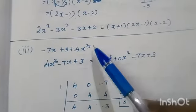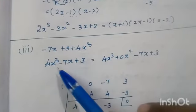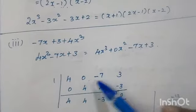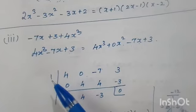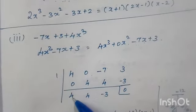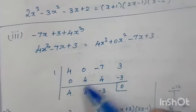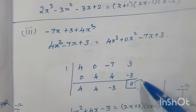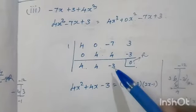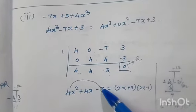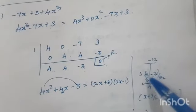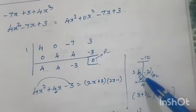Third problem: minus 7x plus 3 plus 4x³. Rewrite in standard form as 4x³ minus 7x plus 3. One term is missing, so write as 4x³ plus 0x² minus 7x plus 3. Take coefficients: 4, 0, minus 7, 3. Try 1: bring down 4, multiply 4 into 1 is 4, add to 0 gives 4, multiply 4 into 1 is 4, add to minus 7 gives minus 3, multiply minus 3 into 1 is minus 3, add to 3 gives remainder 0. So 1 is a factor, giving quotient 4x² plus 4x minus 3.